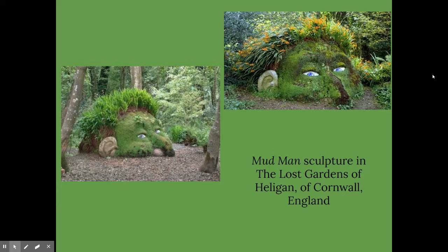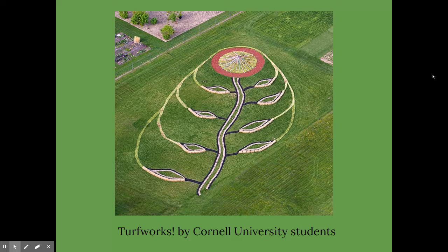The Mudman sculpture in the Lost Gardens of Heligan in Cornwall, England. I love the hair and the expression on the face and all the different values of color and texture.